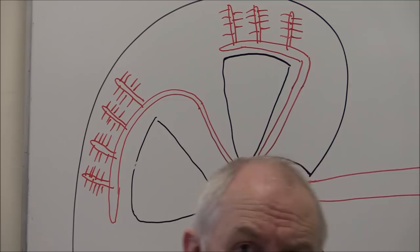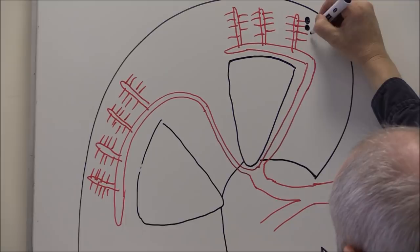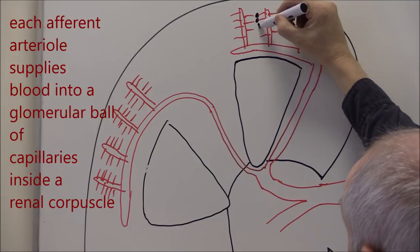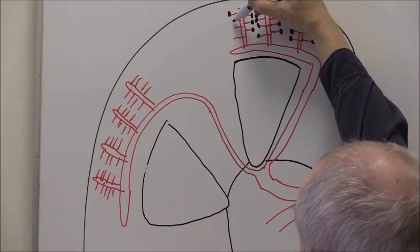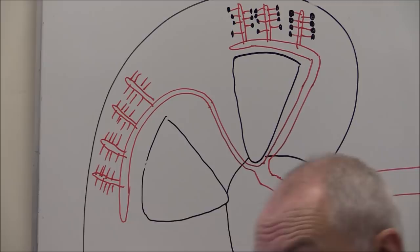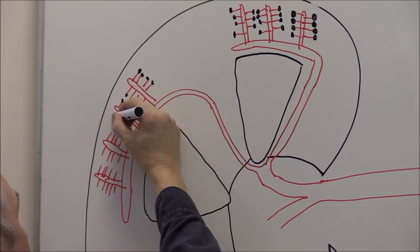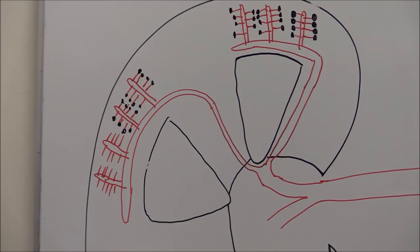The afferent arterioles take blood into the individual renal corpuscles. You might have half a million individual renal corpuscles, you might have a million and a half — some people even have two million or slightly more. The average is about one million per kidney. These are all supplied with blood by the individual afferent arterioles.